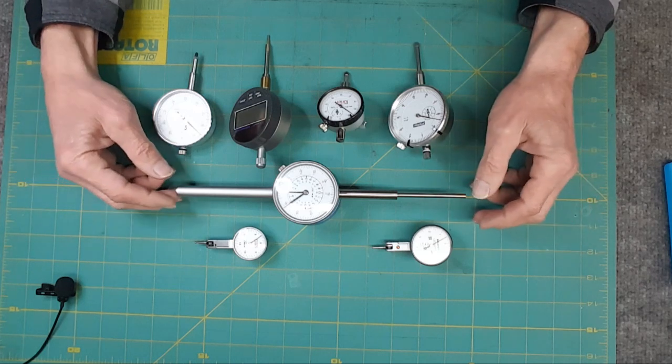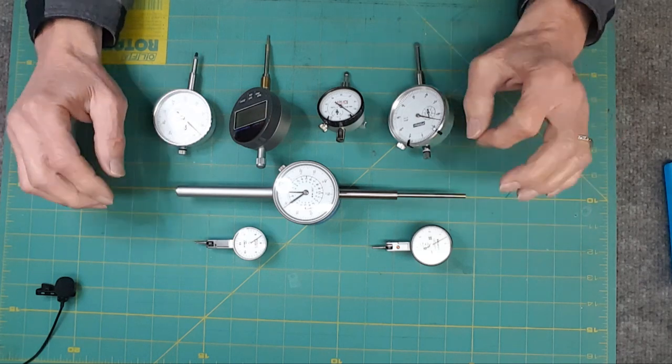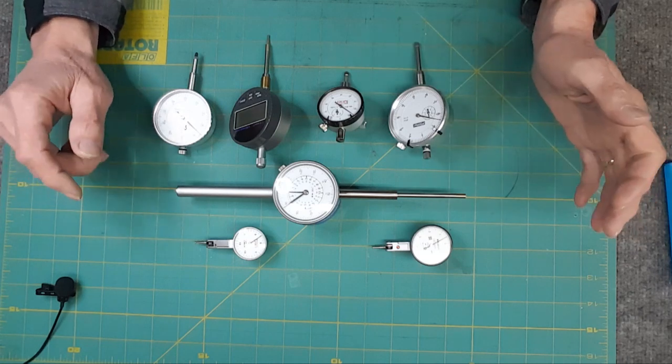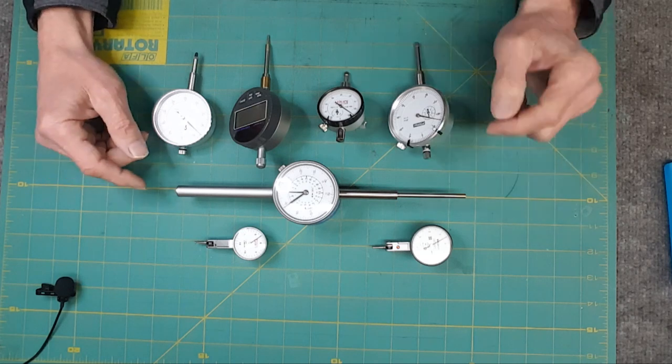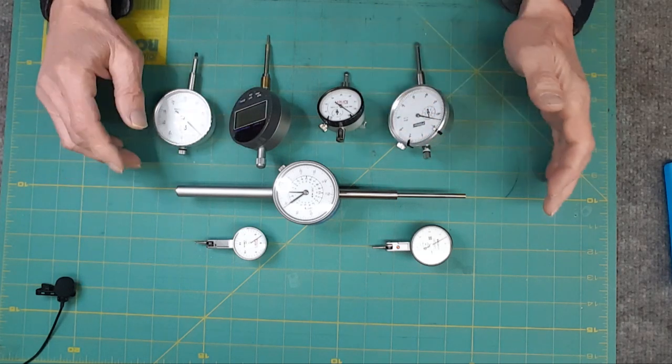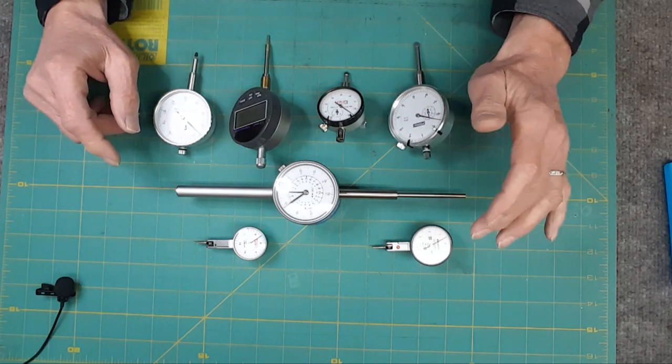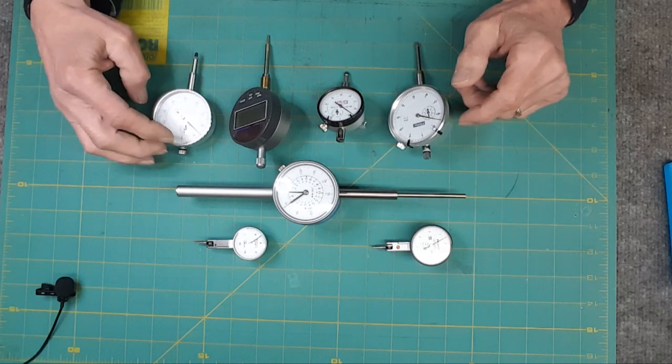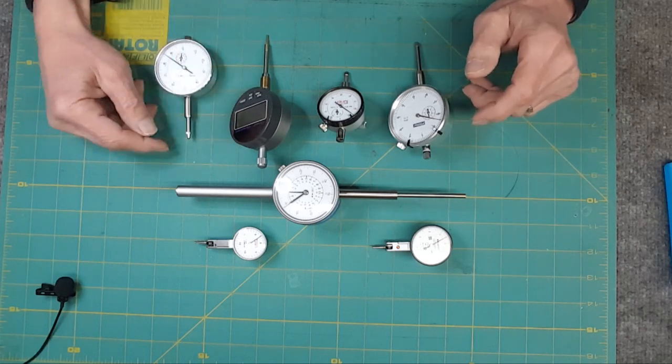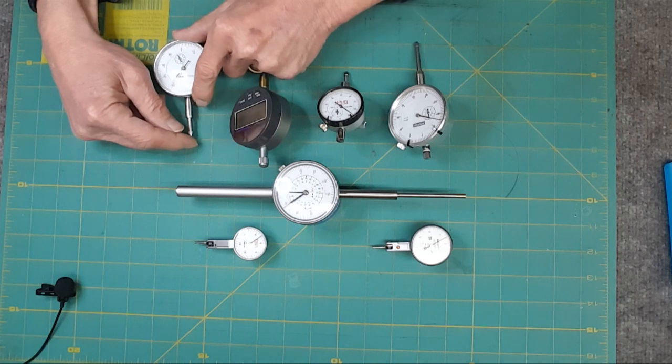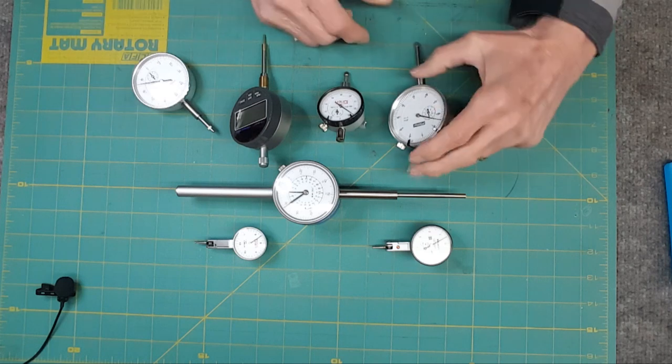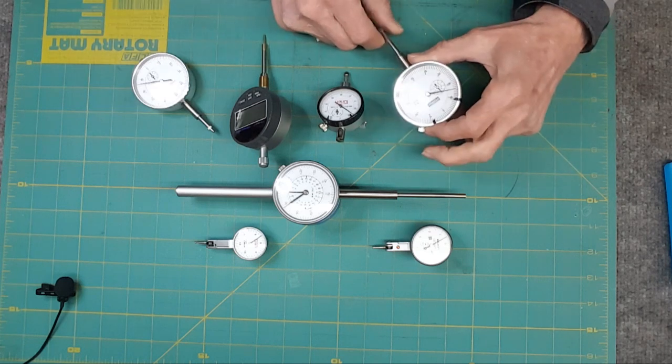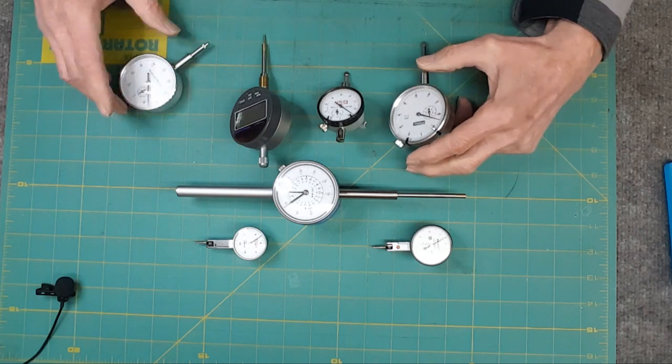I lucked out with these guys, I've got a granite surface, I've got a comparator stand, and I've run them through their paces. If you want something that's pretty accurate, metric. This guy is basically point zero one millimeters per division. And if you do the math, you'll figure out how many thousands that is, or tenths of a thou.